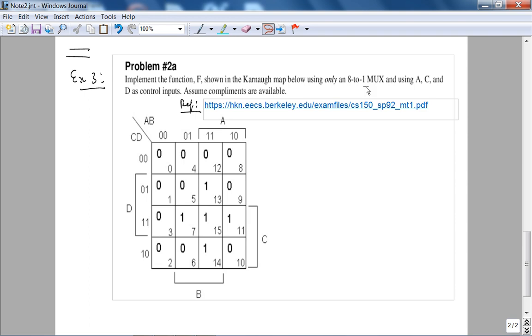This question where we are asked to implement the following function below, shown via K-map, using only an 8-to-1 mux, using A, C, and D as control inputs. Assume complements are available. Since we have an 8-to-1, before we get started, let's look at the K-map. Now notice this notation, which I didn't mention in last lecture when we discussed K-maps.